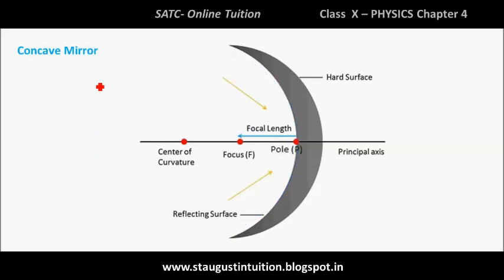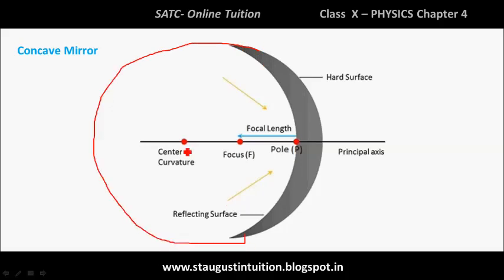For a concave mirror, the basic terms are: the center of curvature, known as C; the principal axis; the pole, known as P; and the focus, known as F. The focal length is the distance from the pole P to the focus F.